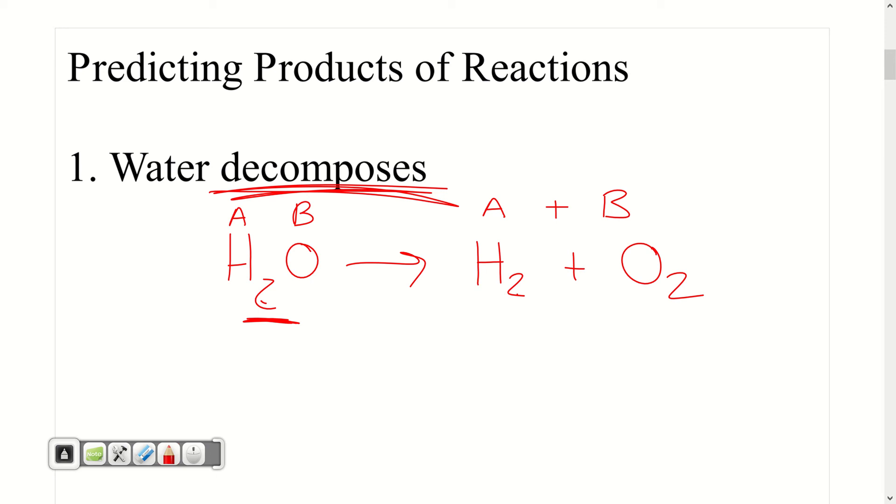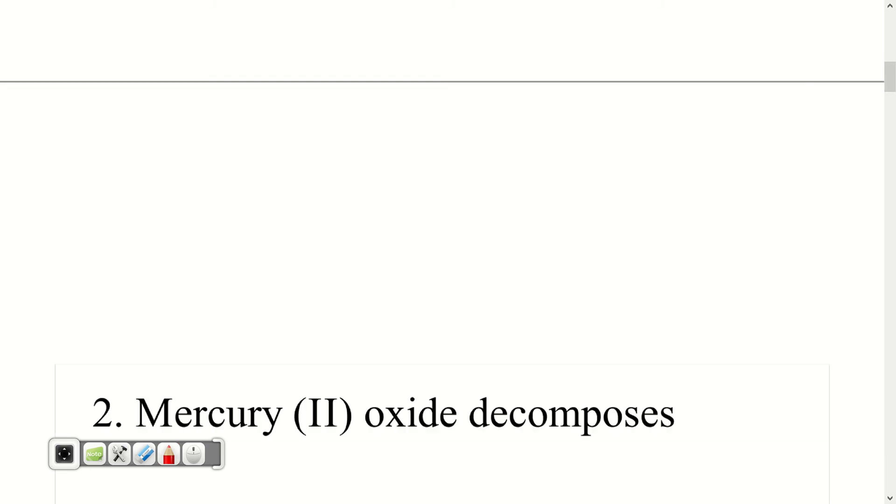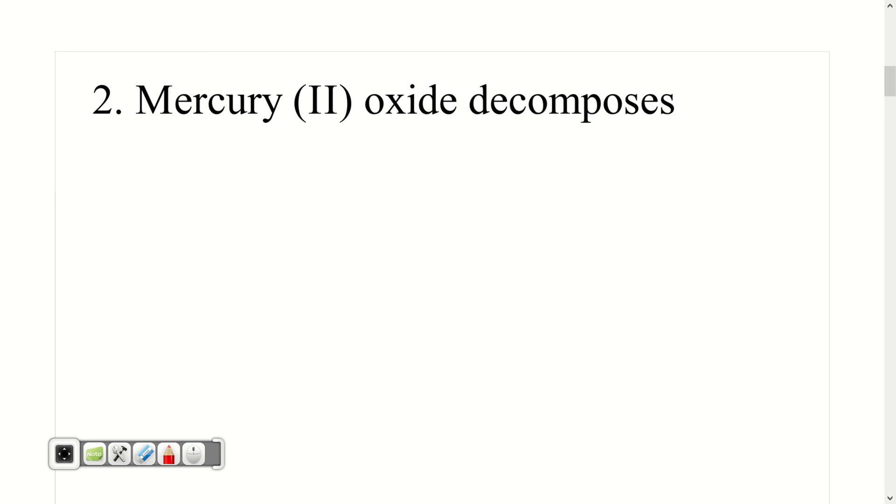Now you just got to balance. So two hydrogens, two hydrogens, one oxygen, two oxygens. I need to put a two out front here. Now oxygens are balanced, but now I have four hydrogens, so I need to put a two over to the other side. There's my balanced reaction. Let's just do one more decomposition just to make that clear. I feel like decompositions now are going to be pretty straightforward. You kind of just have to recognize if it's a diatomic involved.